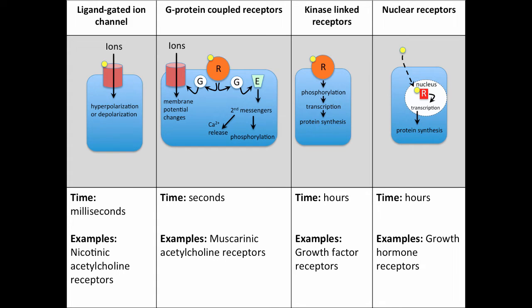There are many different types of receptors, and in general, the term receptor can refer to a protein that binds to a ligand. For example, ligand-gated ion channels. When an ion channel binds to a ligand, it opens the ion channel and allows ions to move into the cell, resulting in either hyperpolarization or depolarization. The timescale for this event is on the order of milliseconds.